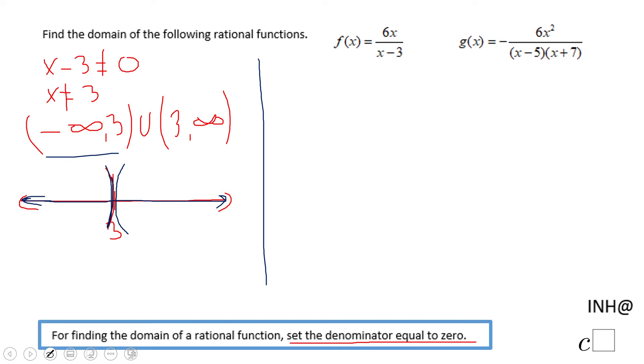Let's move to the second one. We have another rational function: negative 6x squared over x minus 5 times x plus 7.